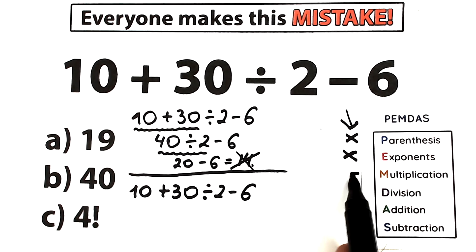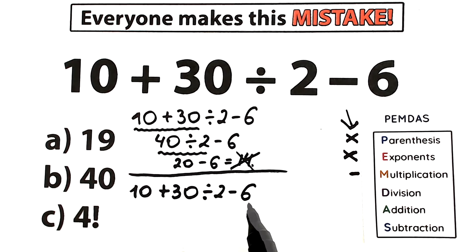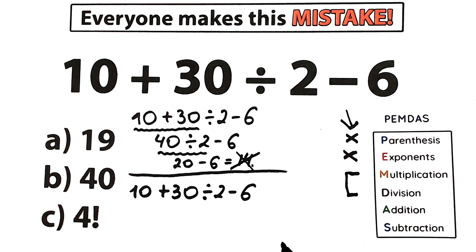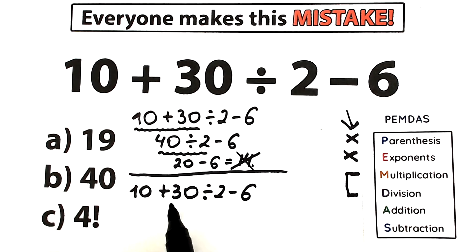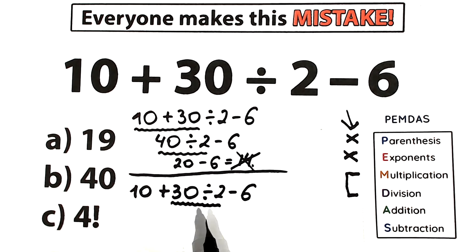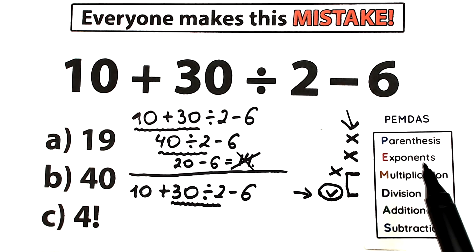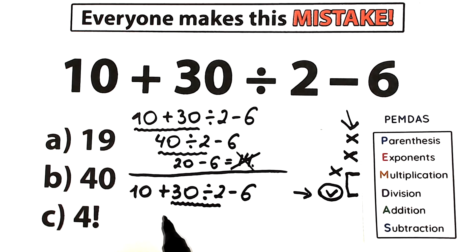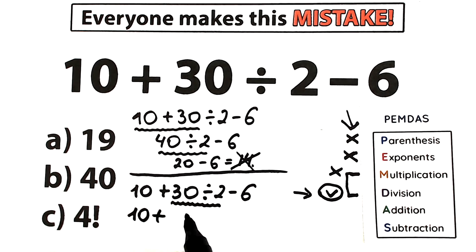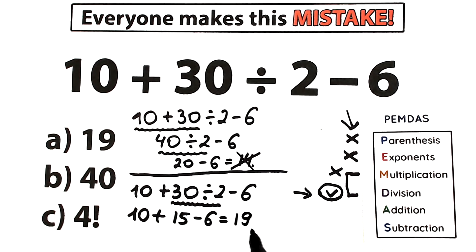The next step is multiplication and division — and note that multiplication and division are one common group with the same priority. Let's find where we have these signs. We have addition, and we have division — we are interested in division. So we start with division: 30 divided by 2 equals 15. So now we have 10 plus 15 minus 6. That gives us 25 minus 6, which equals 19 — which is option A.